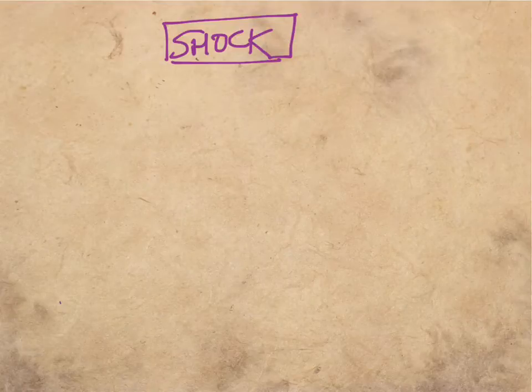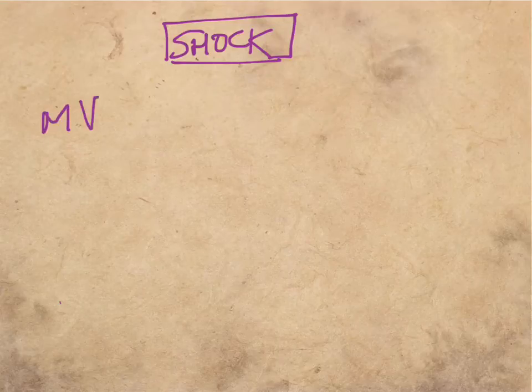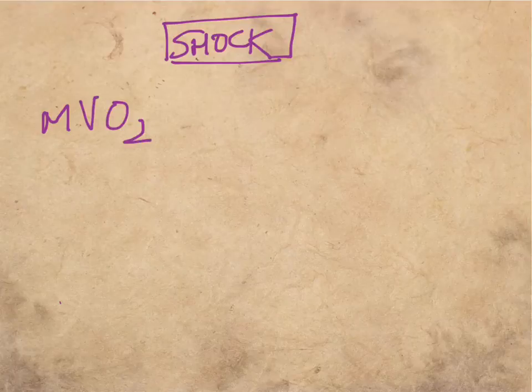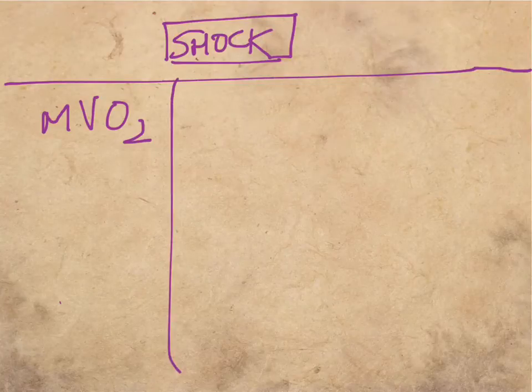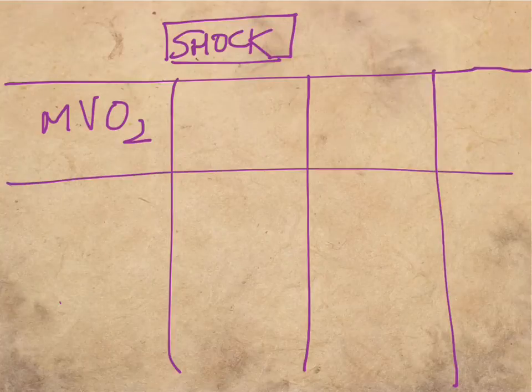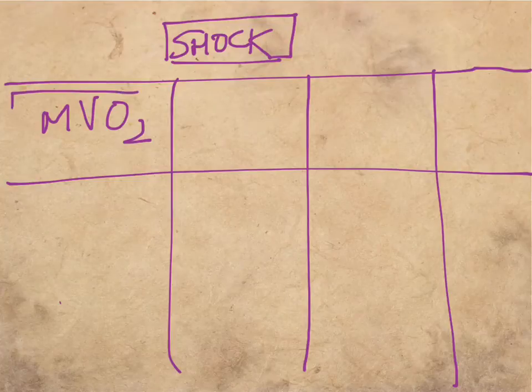This is the topic of shock and the relationship of shock with mixed venous oxygen saturation. MVO2 is called the mixed venous oxygen saturation, and to differentiate the values of MVO2 in different kinds of shock is very important because they could mention the MVO2 in a vignette and expect you to know what will happen to the oxygen in the vignette.